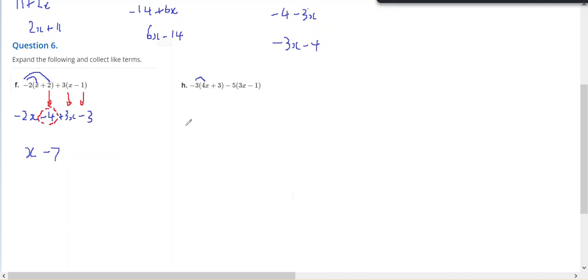So negative 3 times 4x is minus 12x. Negative 3 times 3 is negative 9. Negative 5 times 3 is minus 15x. But negative 5 times negative 1 is positive 5.